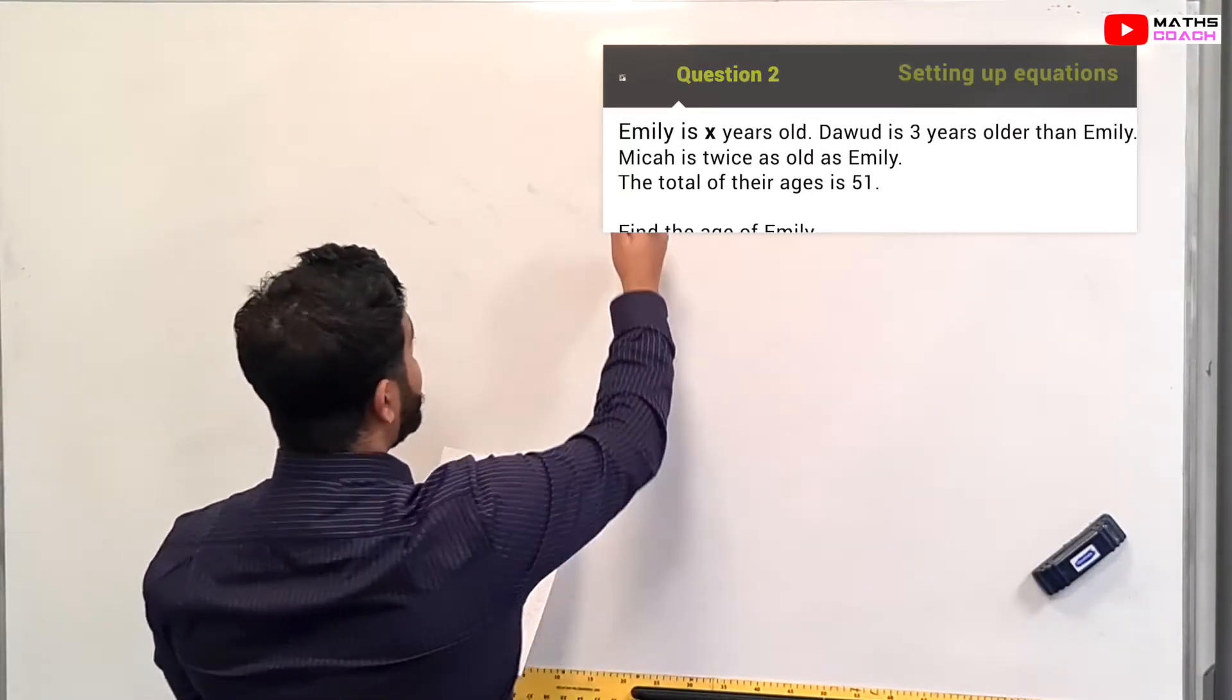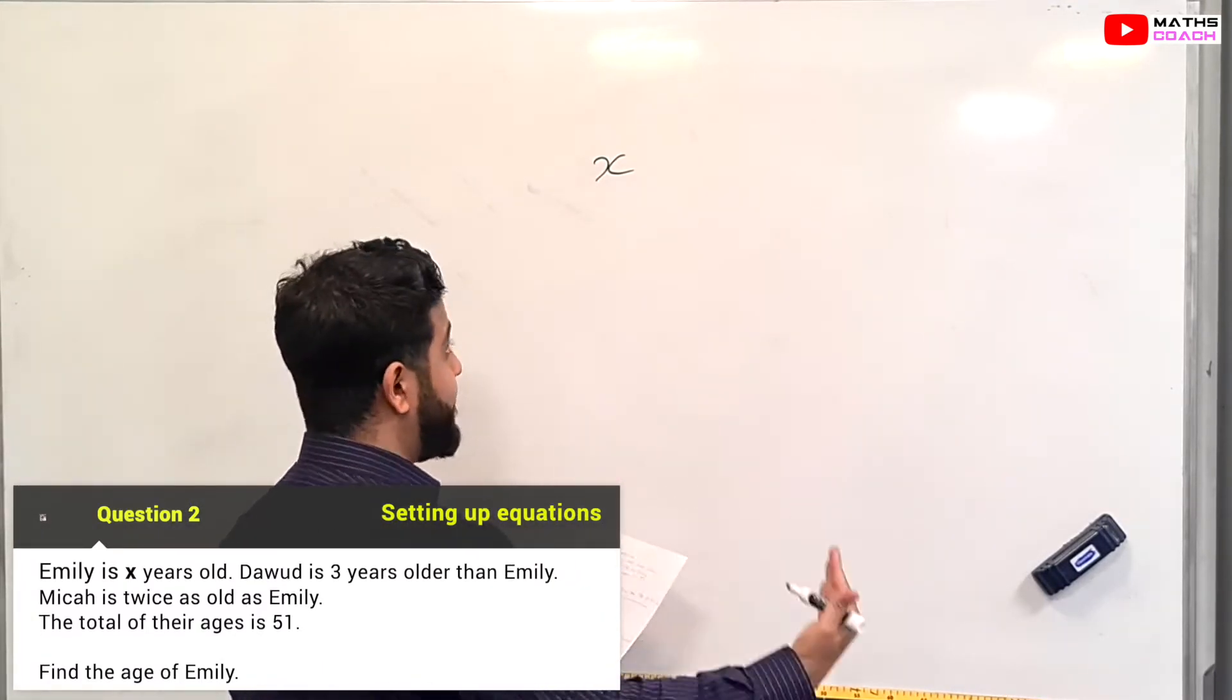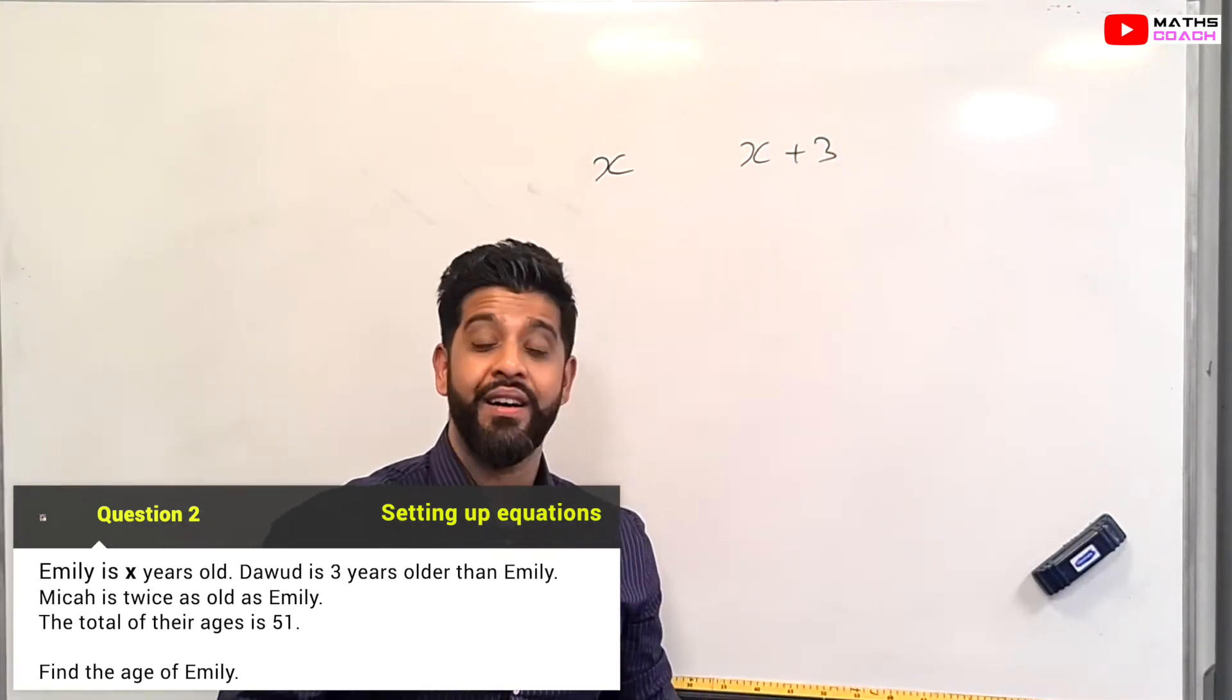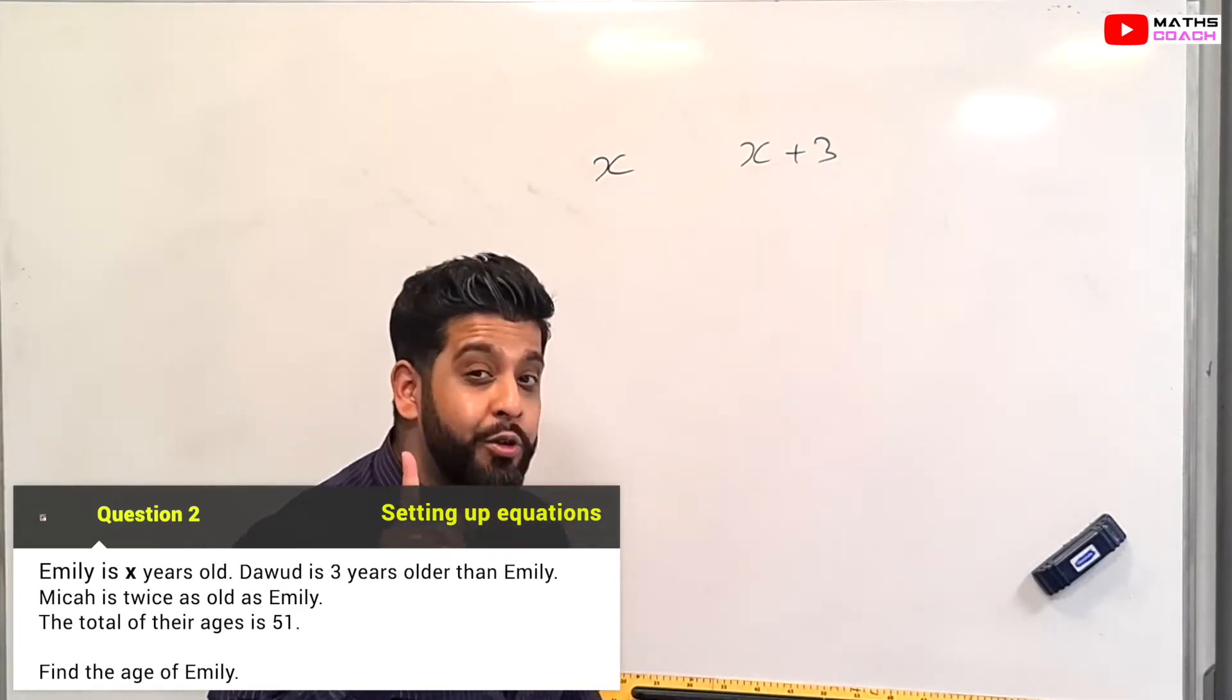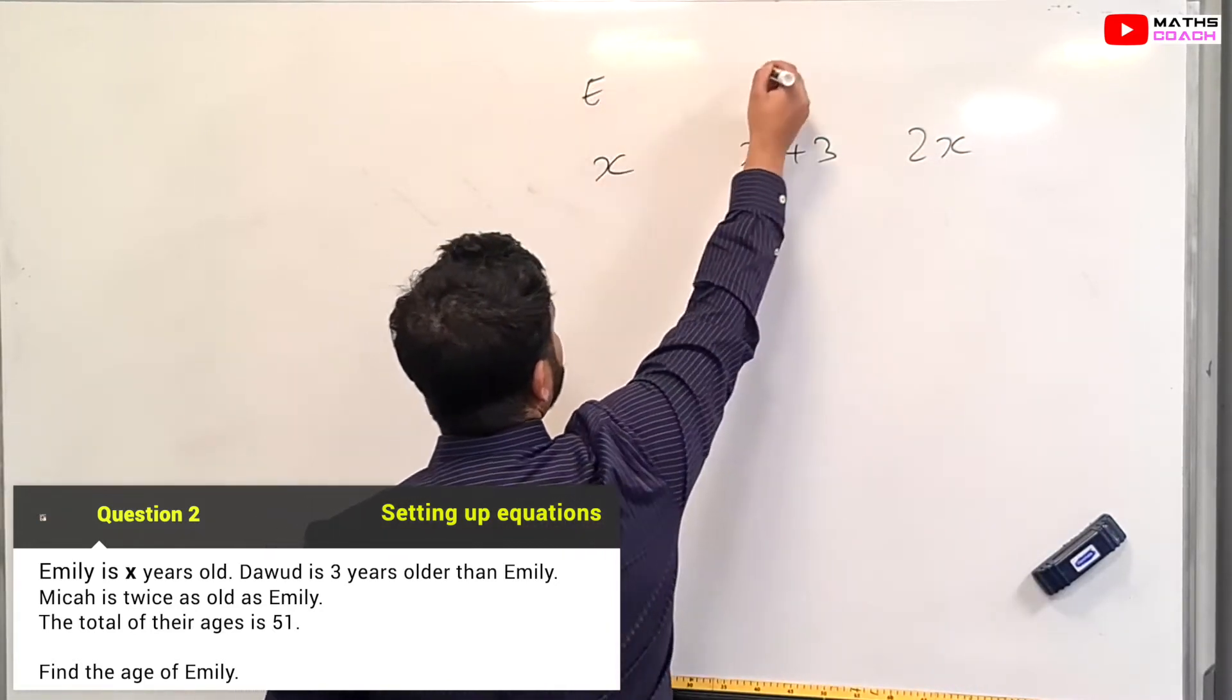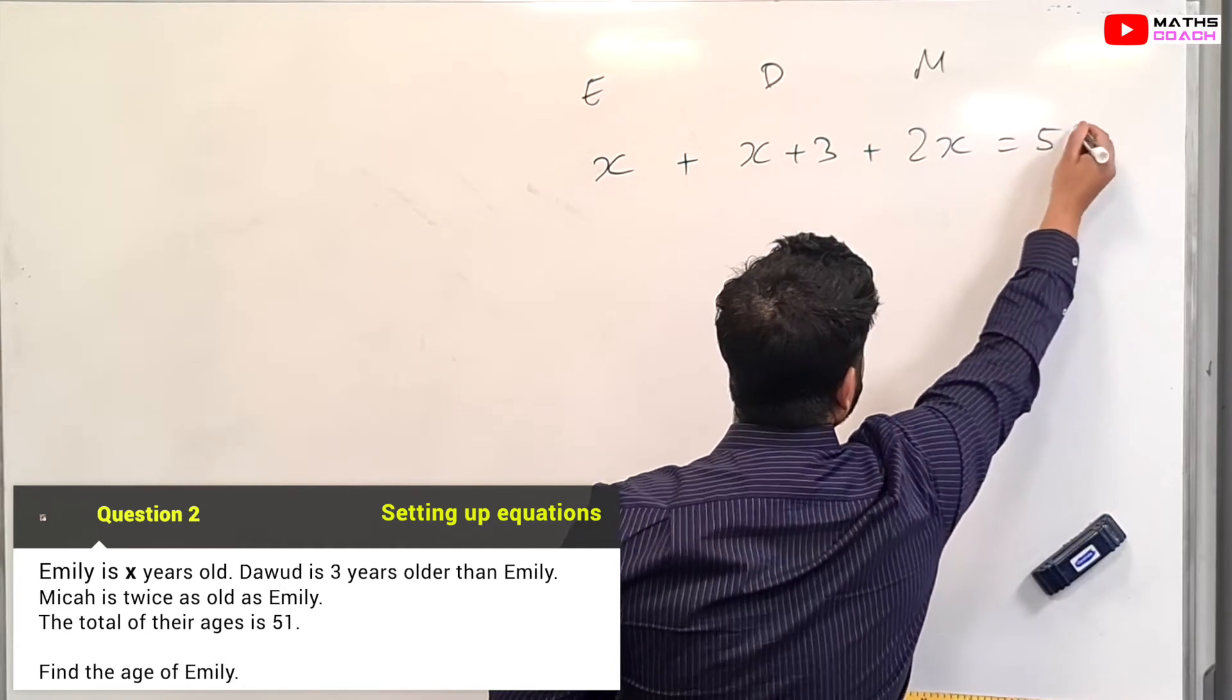So let's start with Emily. We are told that Emily is X, and Dawood is 3 years older than Emily, so X plus 3 represents Dawood's age. Micah is twice as old as Emily, so Micah is 2X. So we have the ages now. This is Emily, this is Dawood, and this is Micah, and the ages add up to 51.